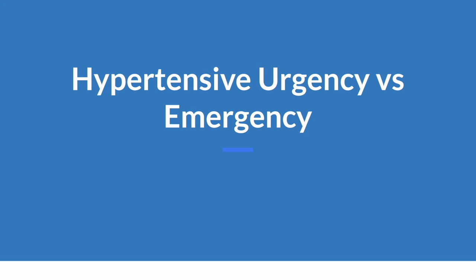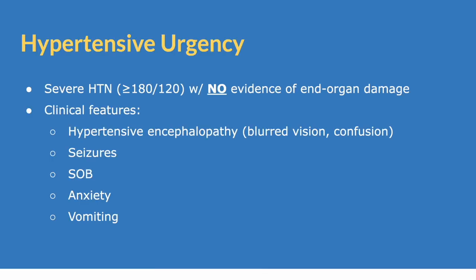Hey everyone, this video is going to very quickly describe the difference between hypertensive urgency versus emergency, so let's get right into it. Hypertensive urgency is defined as severe hypertension, which is greater than or equal to 180 over 120, with no evidence of end organ damage.